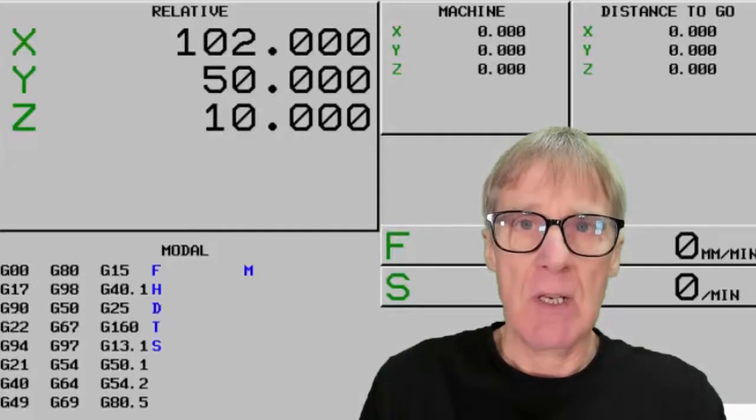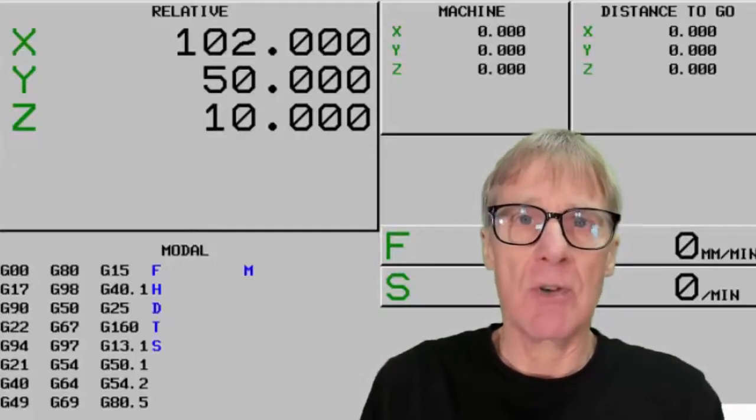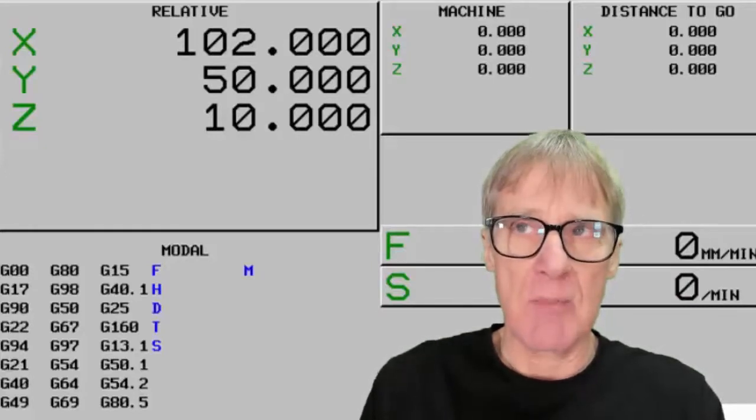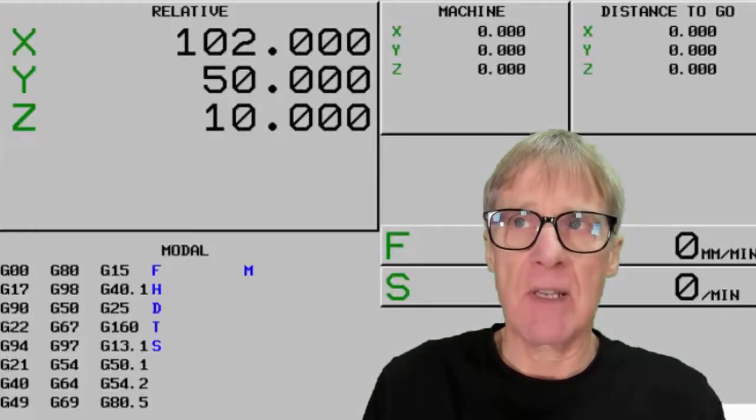What we use it for is when we're actually setting up the machine. So we're moving around, we're clocking things up, and we can zero it up and know exactly how far we've moved in any direction.